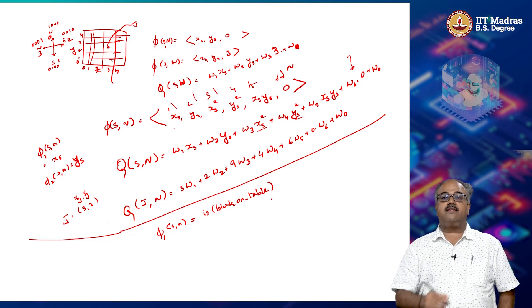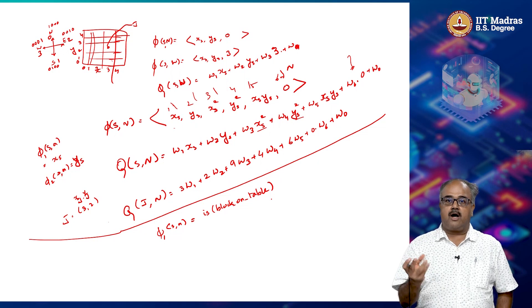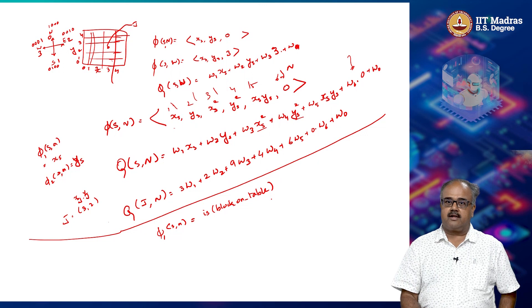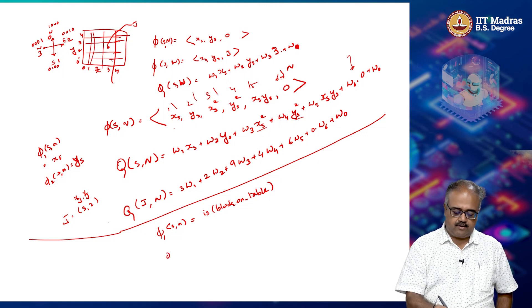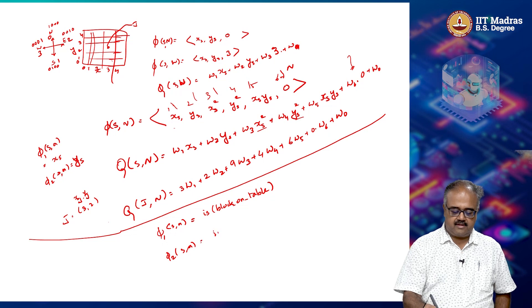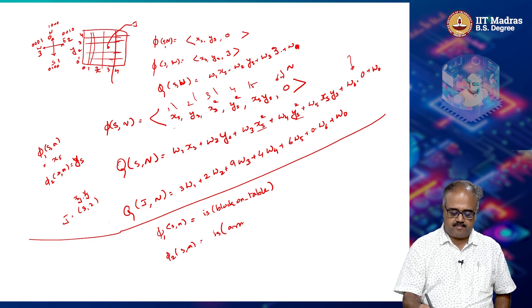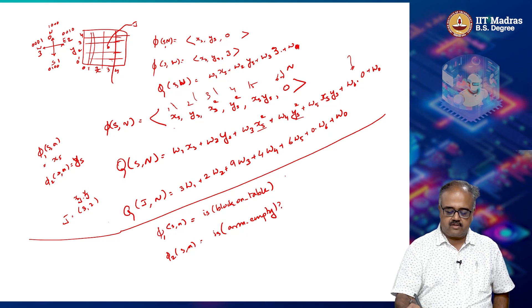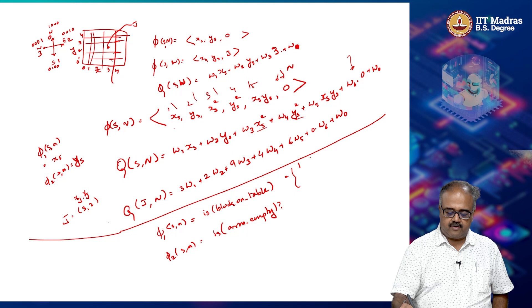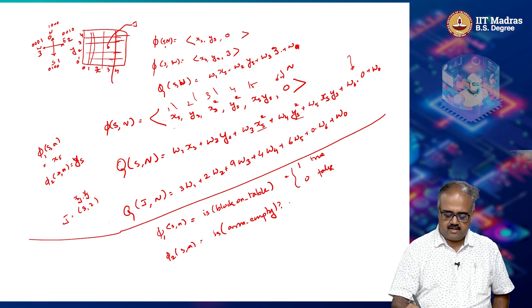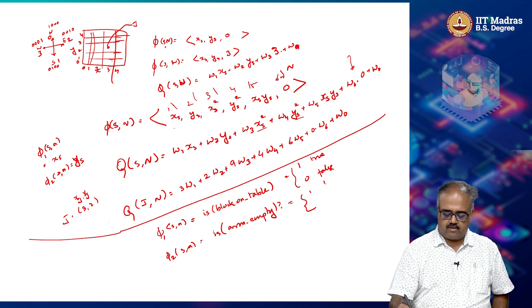So this can basically look at the scene, figure out if there is a block that you are interested, if a block is on table or not. Phi 2 can have something like arm empty, right. If you can think of the. So this is equal to 1 if true, 0 if false.